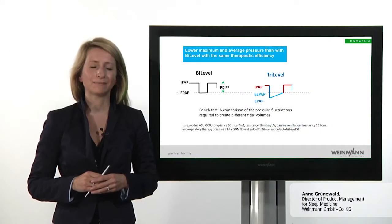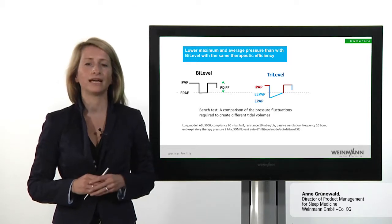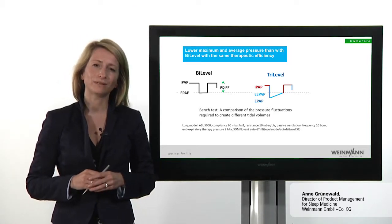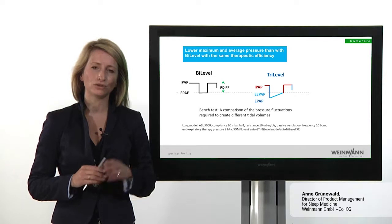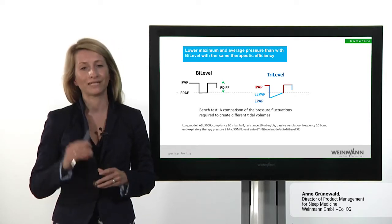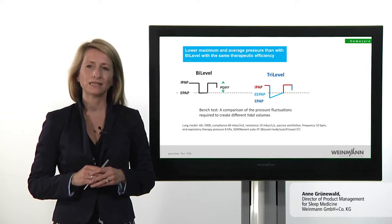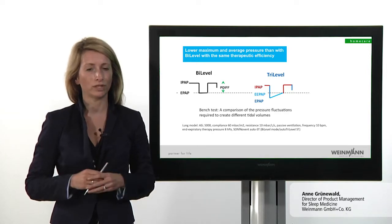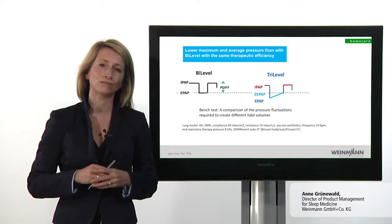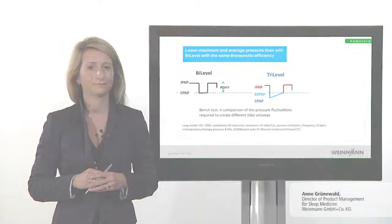What's more, a recent bench test has shown that by further decreasing pressure in comparison to classic bi-level, Tri-Level can achieve both average and maximum pressure levels which are lower by more than 2 hPa and still have the same therapeutic efficiency. In turn, this can result in fewer adverse side effects — for example leakages — and achieve more comfortable breathing and higher compliance.